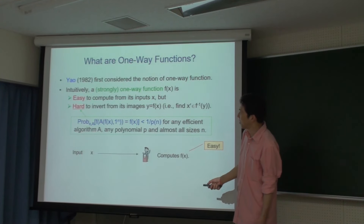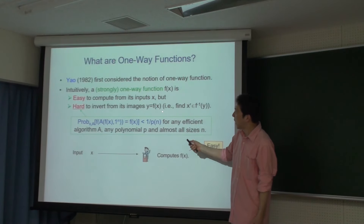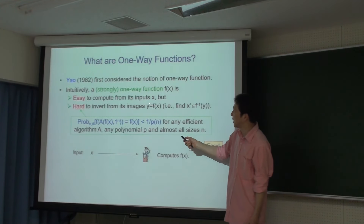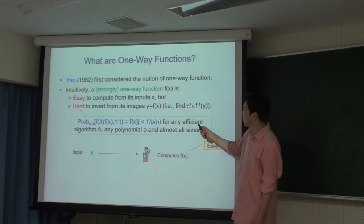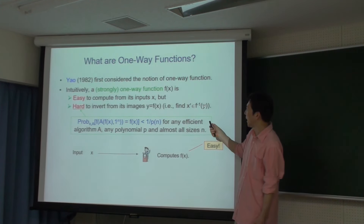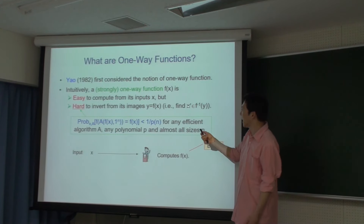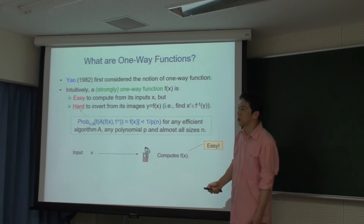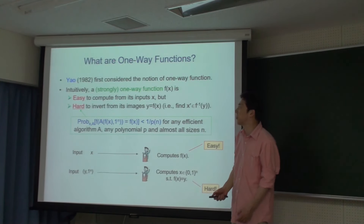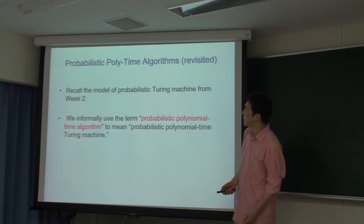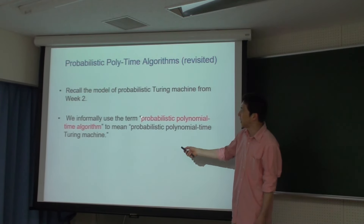その先にビットコミットメントやオブリビアストランスファーなどがありますが、今日はゼロ知識証明の一つ前の段階のインタラクティブプルーフシステムについても話します。ワンウェイファンクションというのは1982年にYaoが最初に提出した概念で、基本的には計算は簡単です。xが入力として与えられるとFは簡単に計算できますが、f(x)の値から元のxを見つけることが難しい、逆関数を計算することが非常に難しい特別な関数です。